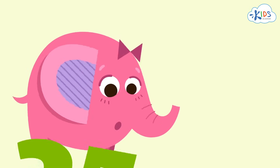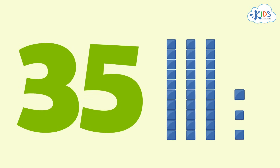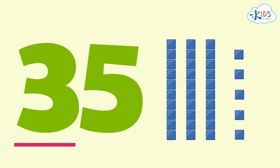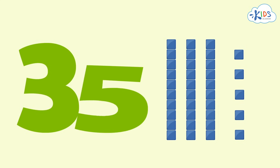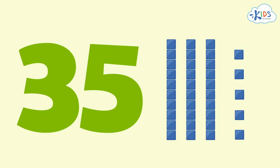When we look at a number like 35, each digit in this number has its own value. There is a number in the ones place and a number in the tens place. The ones place is furthest to the right. The number in the ones place always equals itself — in our number 35, the five is in the ones place and its value is just five, represented by five ones cubes.